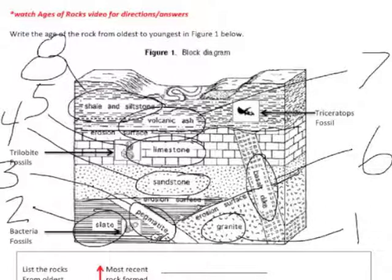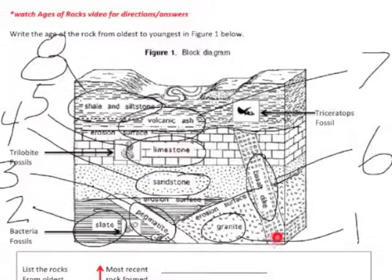Alright, so there it is. Granite, then slate, then pegmatite. Sandstone, then limestone, then basalt. Then the Volcanic Ash and Shale and Siltstone.